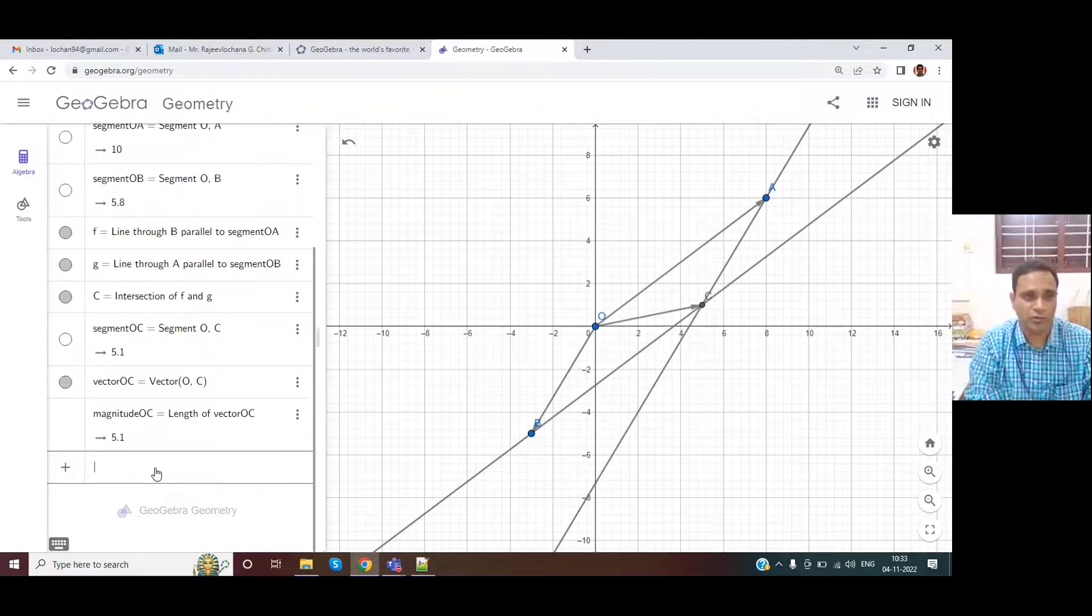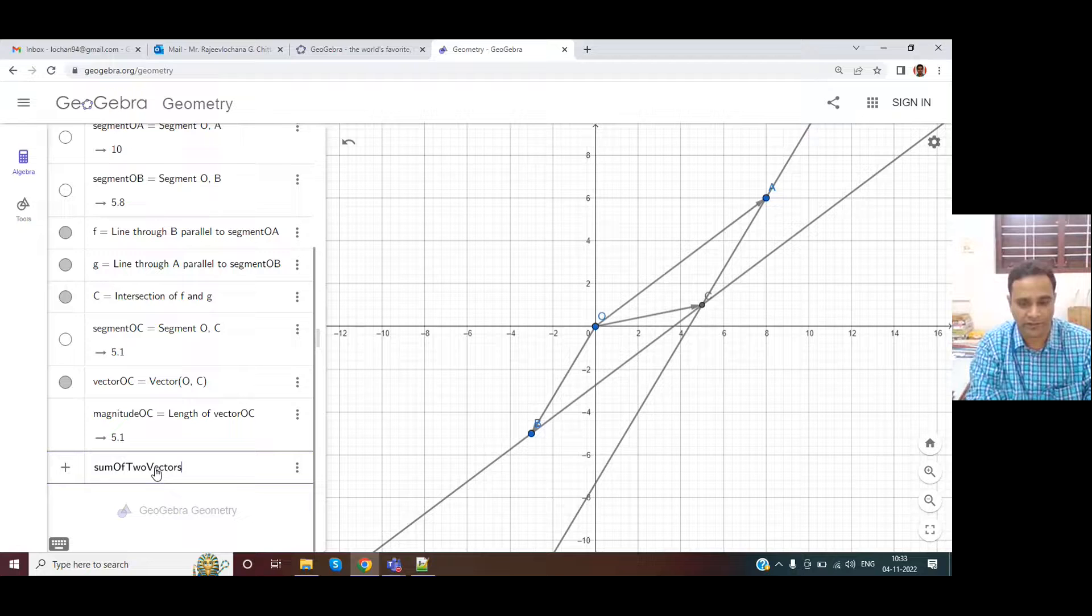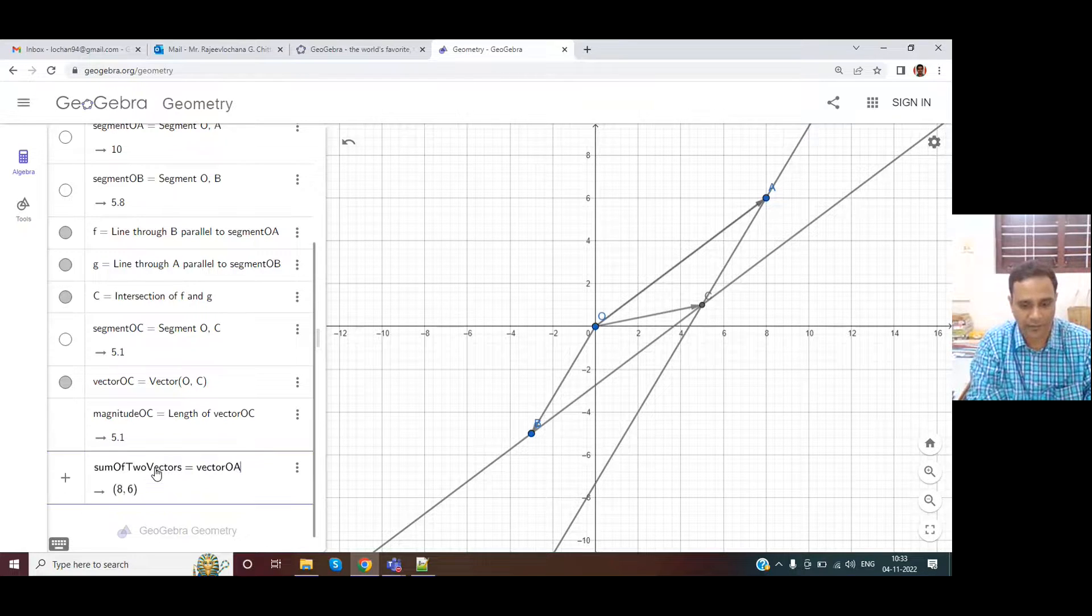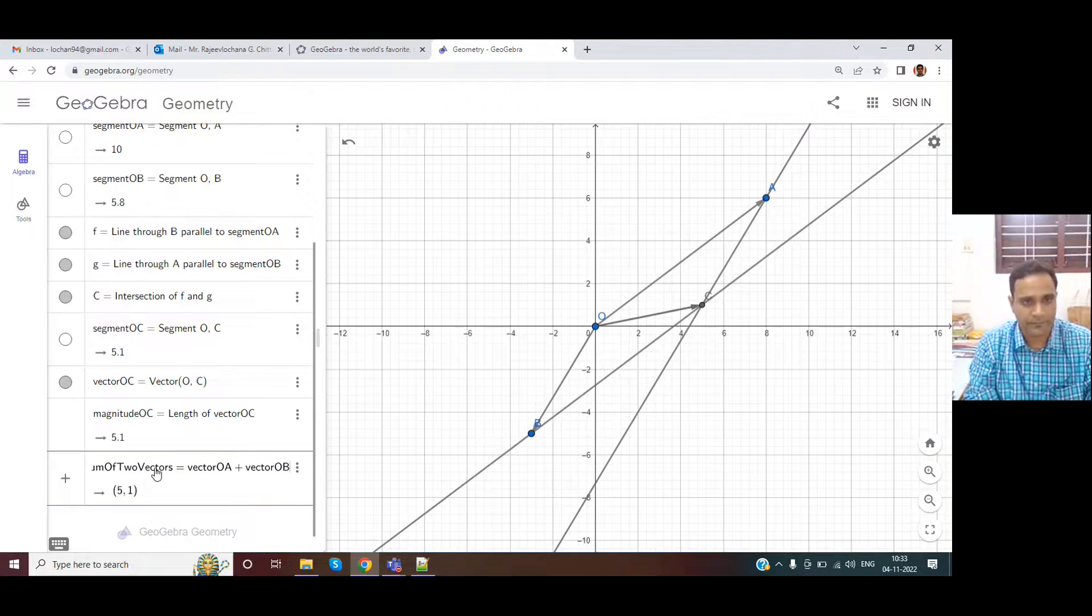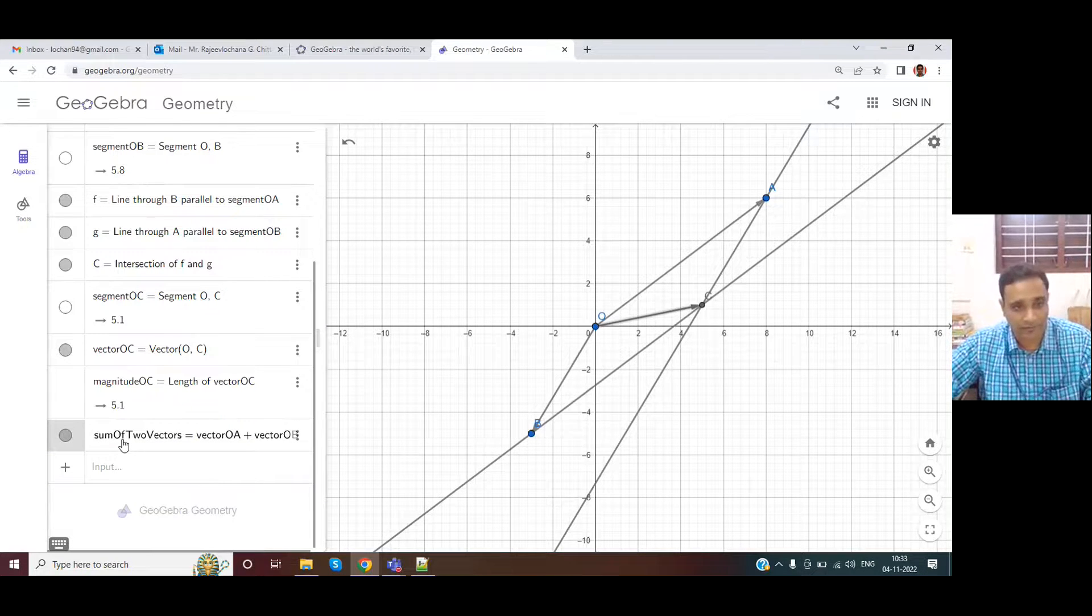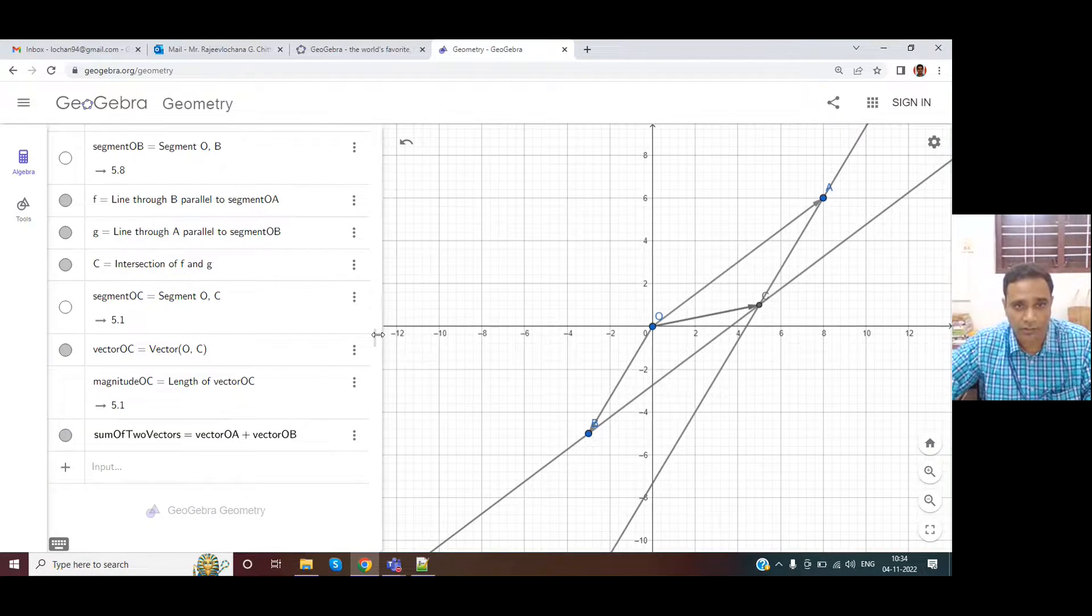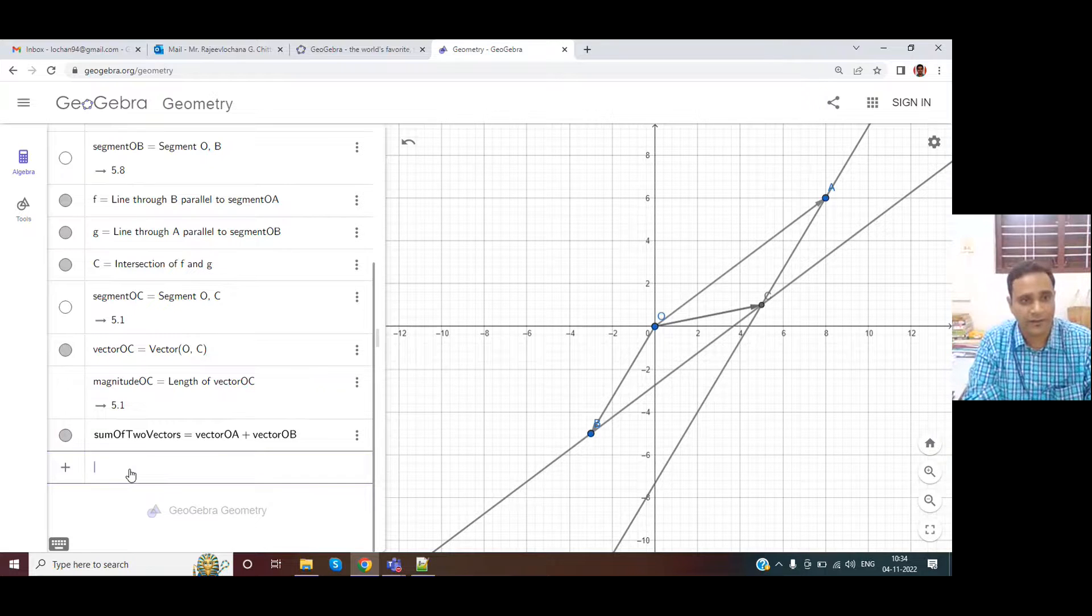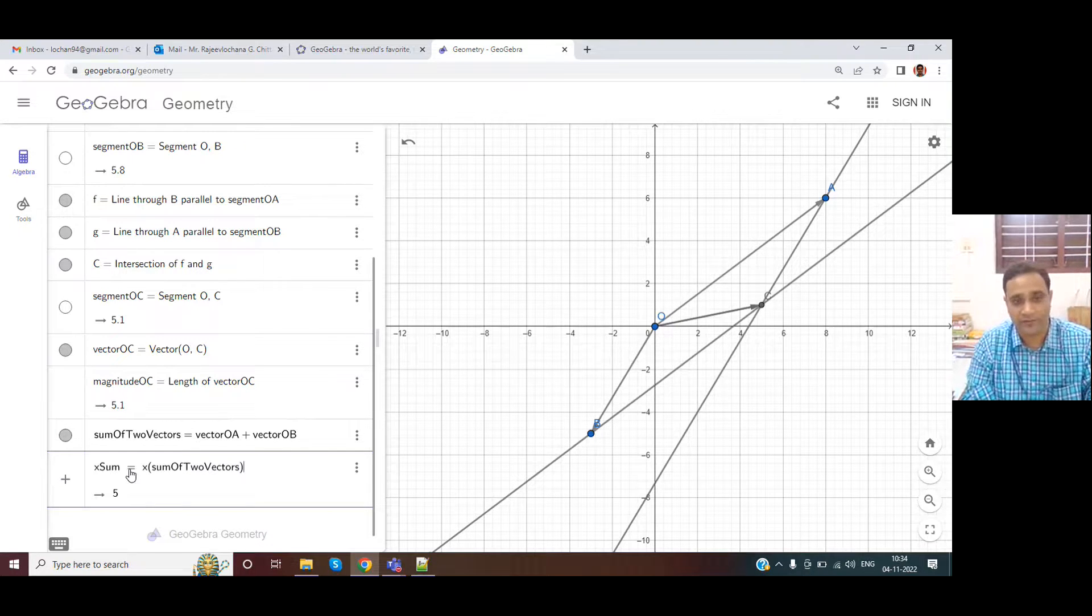So vectors can be easily checked where they are. And if you want to sum two vectors, sum of two vectors, whatever it is, let's say we have vector OA plus vector OB. So this particular vector, when I typed it, you would have seen the column format. If at all you want to know the resolution of that vector, I can say X of sum is a parameter. I'll say X of sum of vectors, sum of two vectors. That is a variable name I have. So that is a five component.